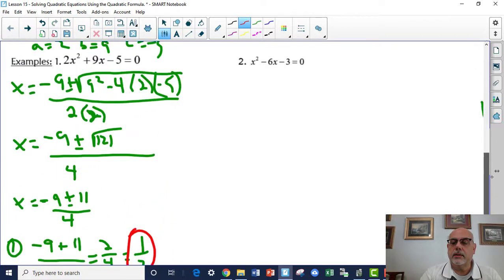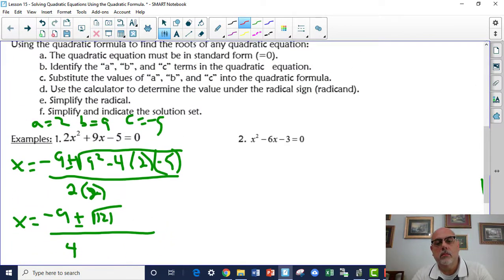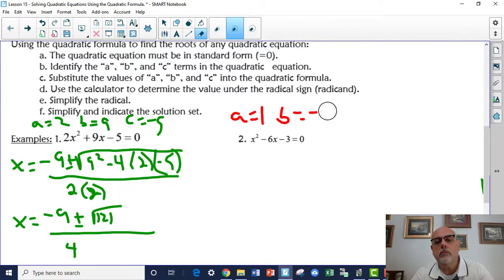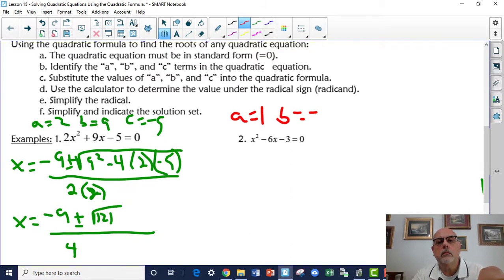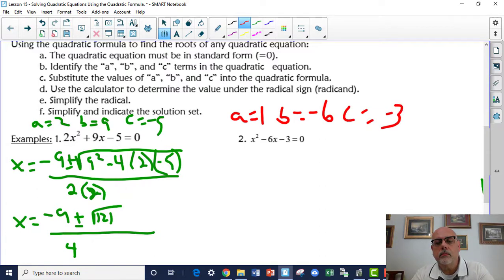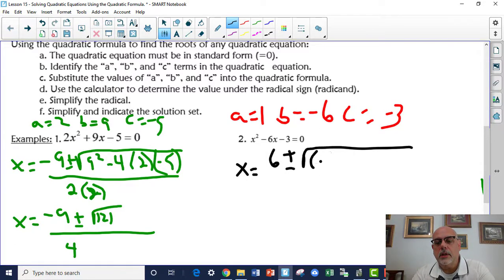Let's take a look at example two. A equals 1, B is negative 6, and C is negative 3. So x equals negative b is 6, plus or minus the square root of negative 6 squared minus 4 times 1 times negative 3.